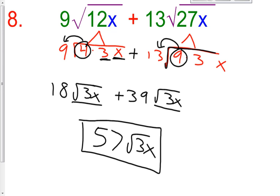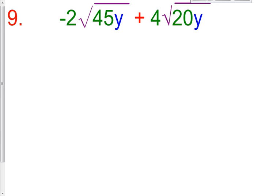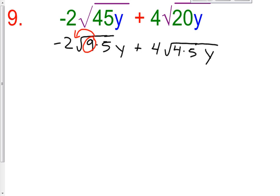You guys try number 9 after doing number 8 with me and see if you guys can get the correct answer for number 9. Negative 2 square root of 9 times 5 times y plus 4 square root of 4 times 5 times y. I'm going to take this 9 out to make it a 3. And negative 2 times 3 is a negative 6 square root of 5y.